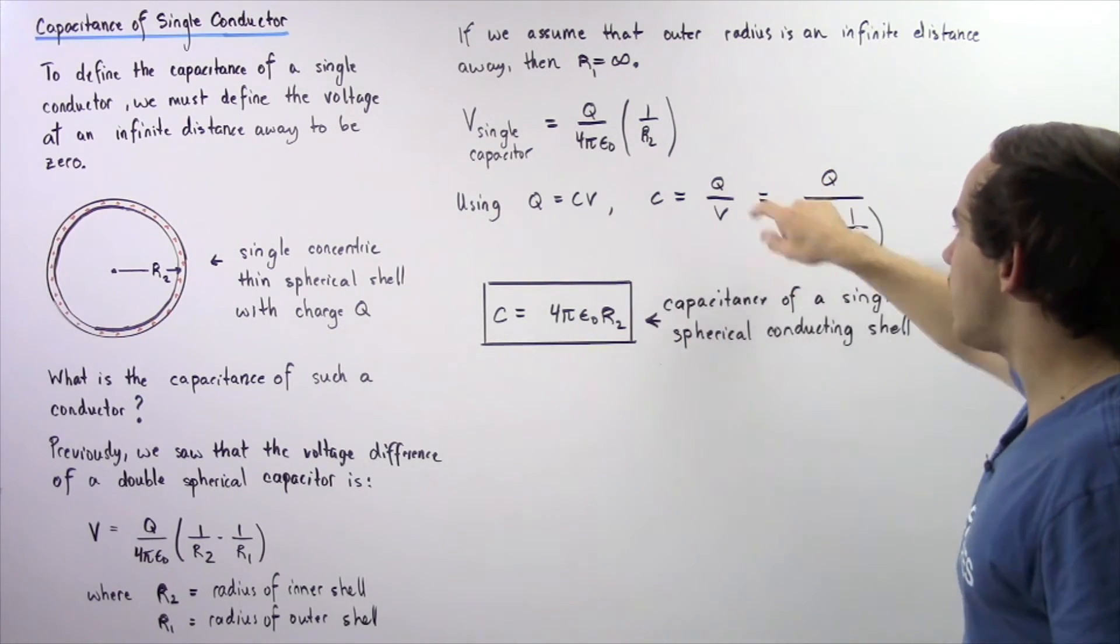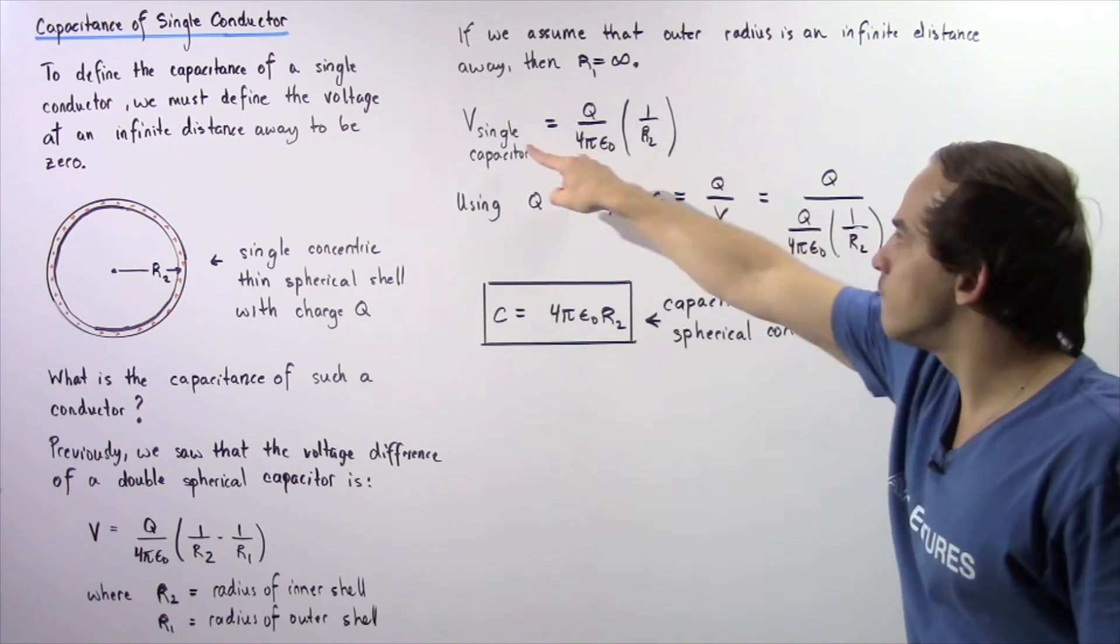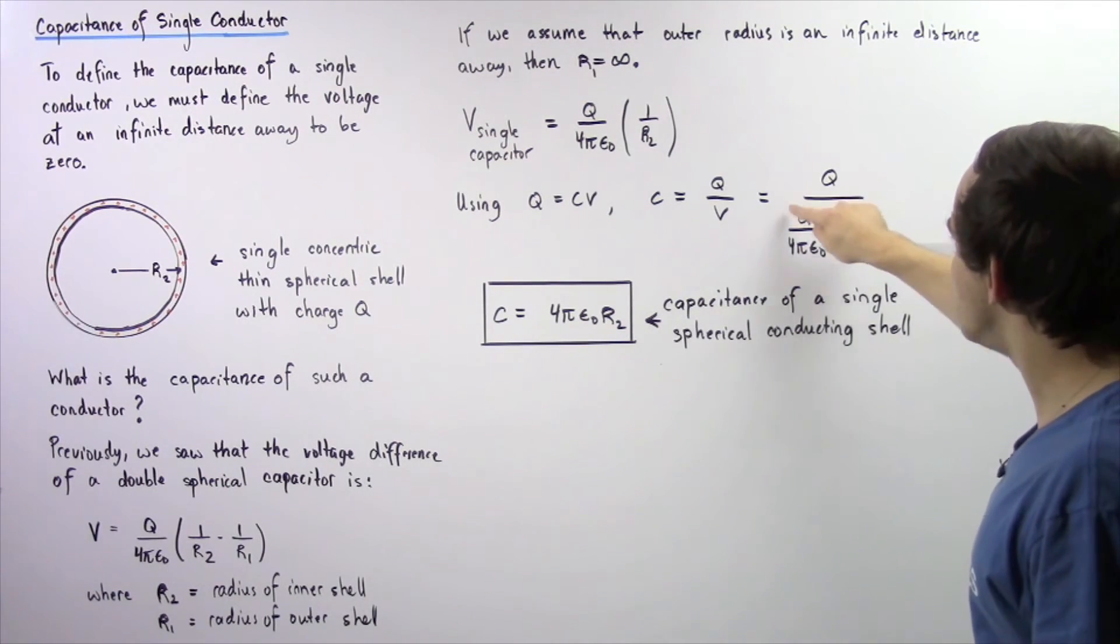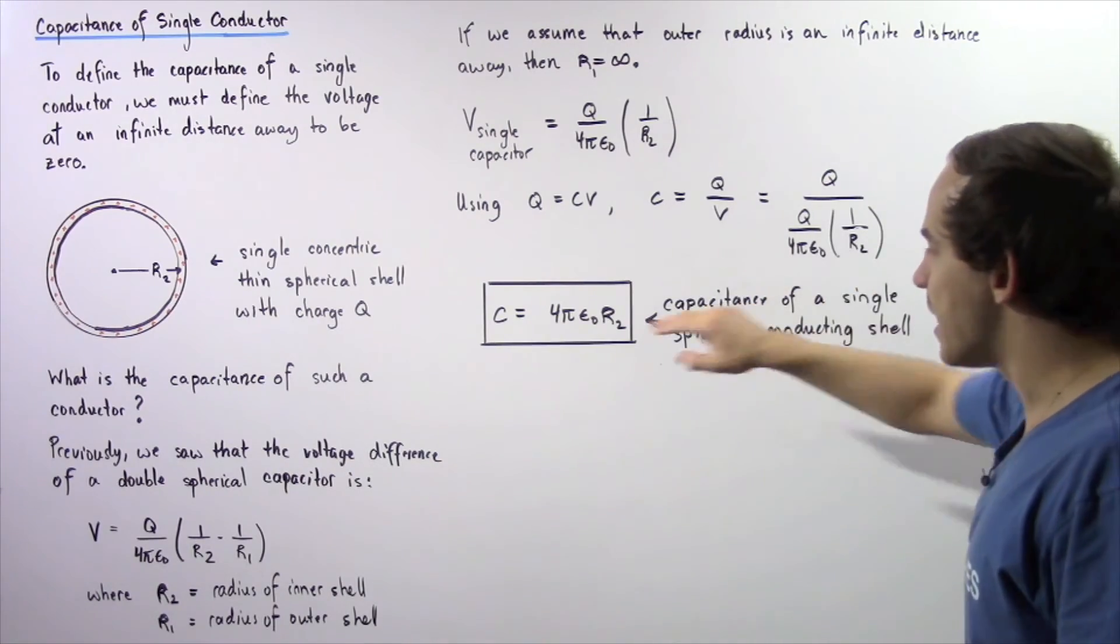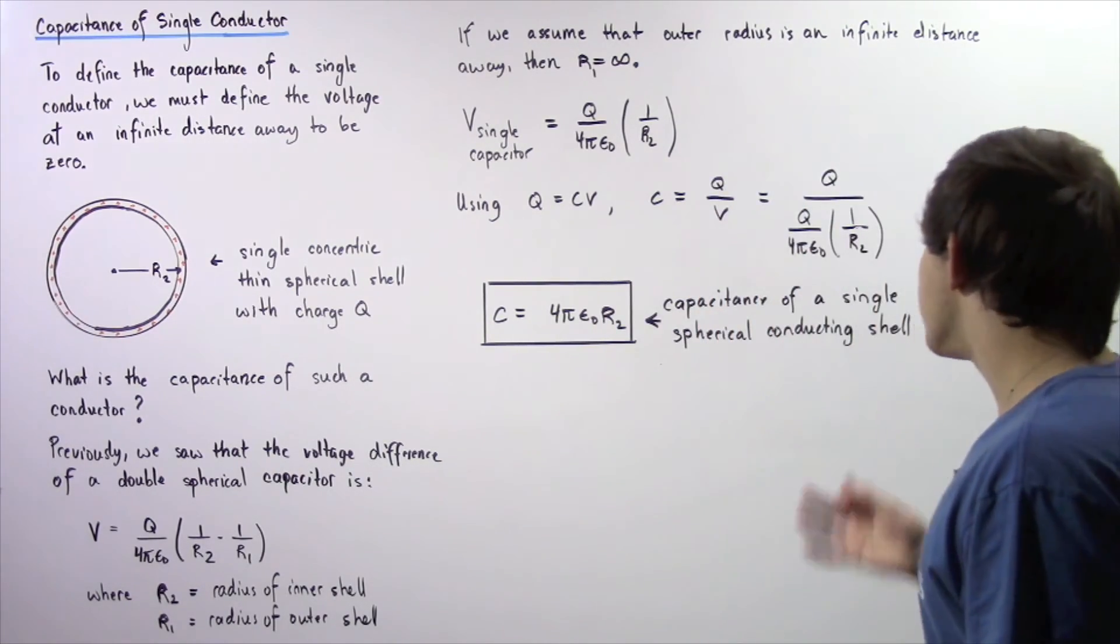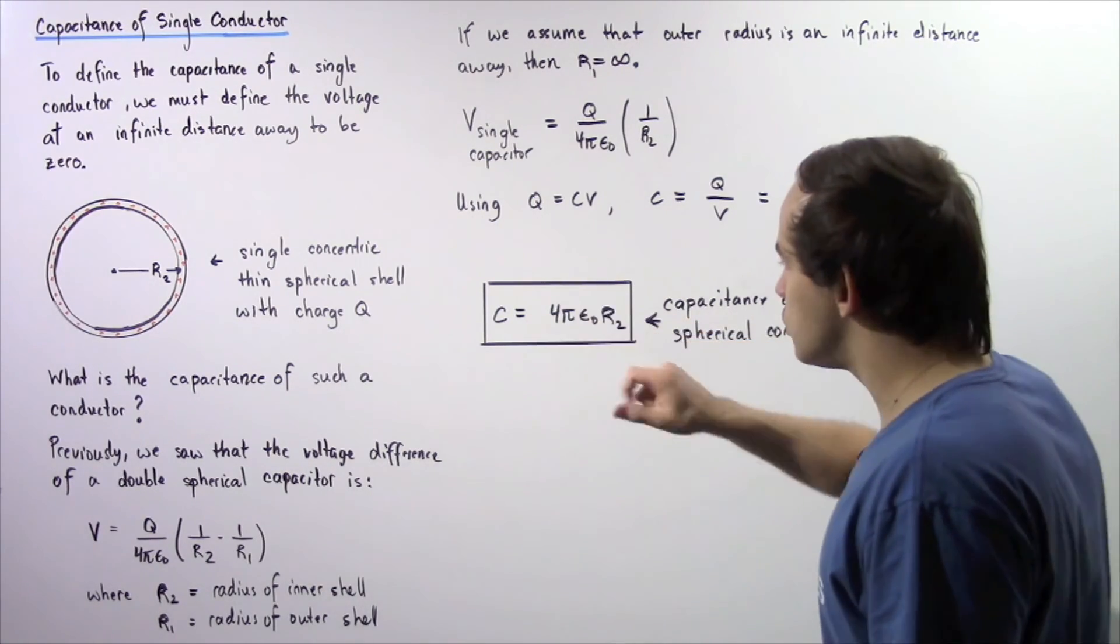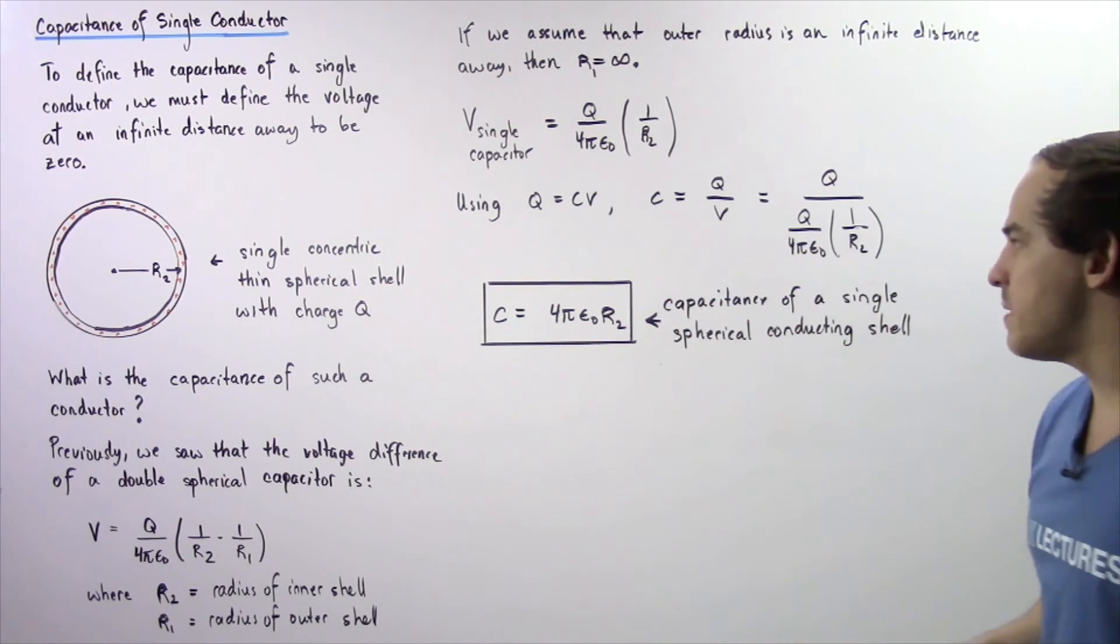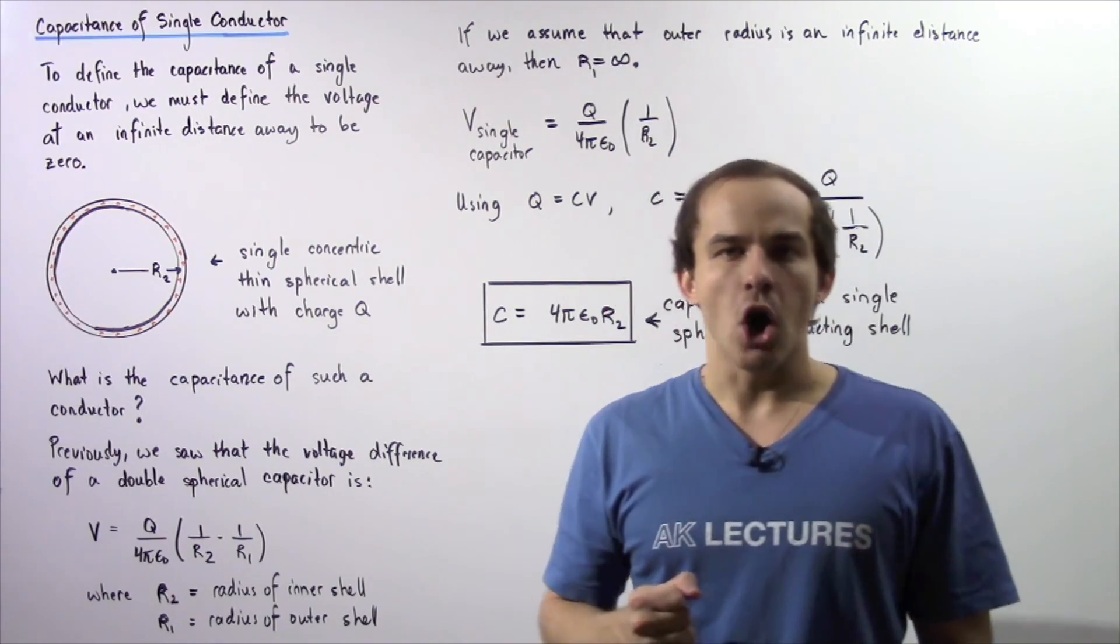Capacitance is equal to q divided by voltage. The q remains, we replace our voltage with this quantity, and we get the following result. Notice that our q's will cancel and this quantity will go on top. And so we see that the capacitance of a single spherical conducting shell with radius R2 is equal to 4π multiplied by ε₀, the permittivity of free space constant, multiplied by the radius given by R2.